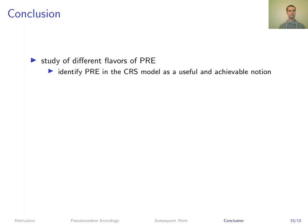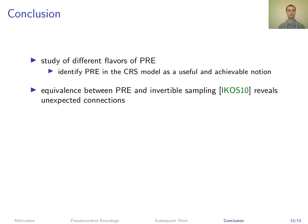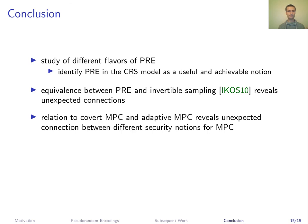To conclude, we provide a systematic study of several flavors of pseudorandom encodings and identify computational randomized PRE with setup as a useful and achievable notion. By the equivalence between PRE and invertible sampling, we obtain unexpected connections between several areas in cryptography — in particular, a relation between covert MPC and adaptive MPC, two different security notions for multiparty computation. PRE provides a new way to look at things and may find more applications. Thank you for your attention.